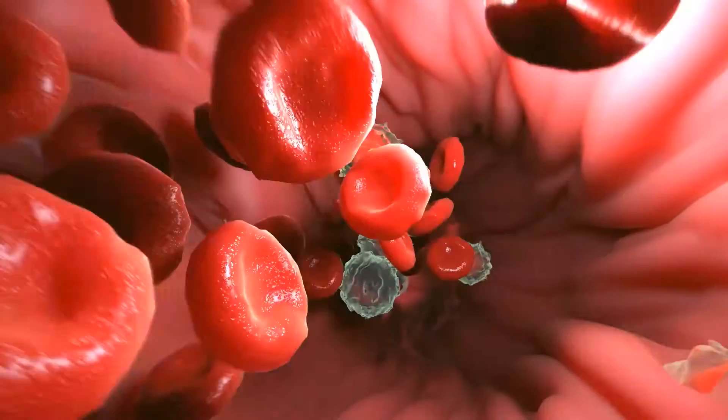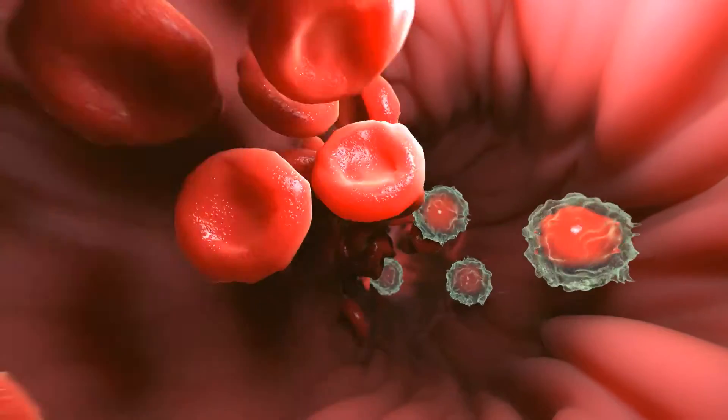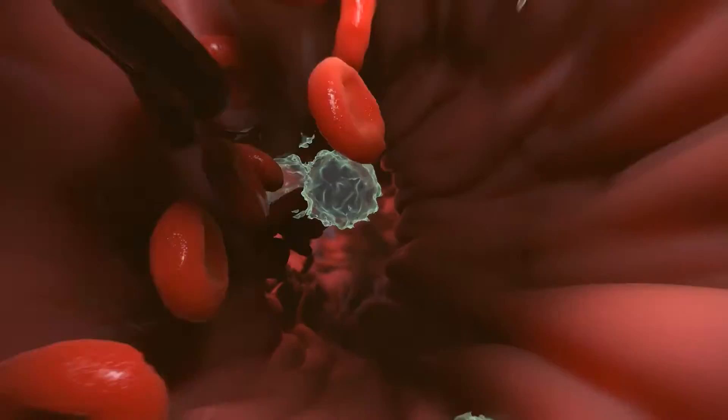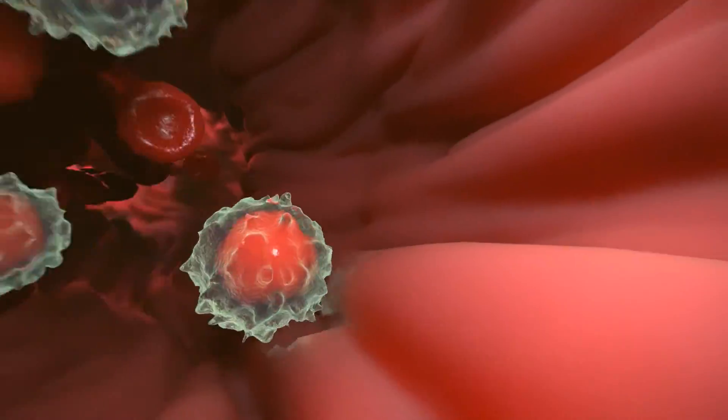In MS, these lymphocytes are able to invade the central nervous system, or CNS, by crossing the blood-brain barrier, which normally keeps them out.